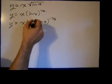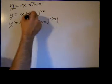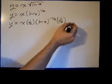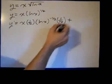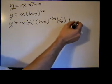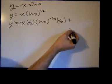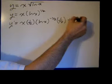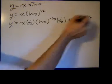And then we take the derivative of the inside, which is the derivative of ln of x, which is 1 over x. There's going to be some cleaning up to be done. Plus, the derivative of the first, which is just x, I mean 1, the derivative of x is 1, times the ln of x, all raised to the 1 half power.